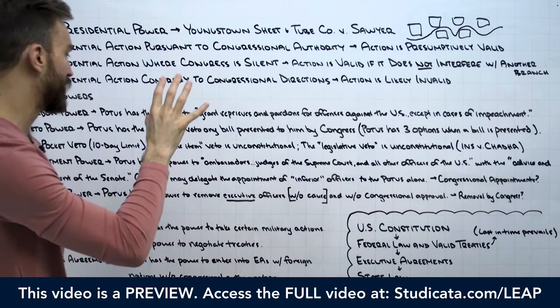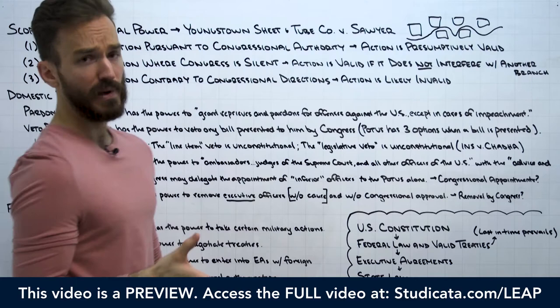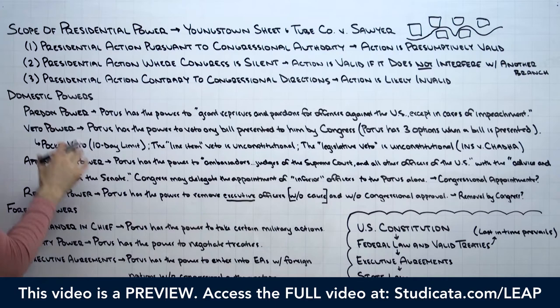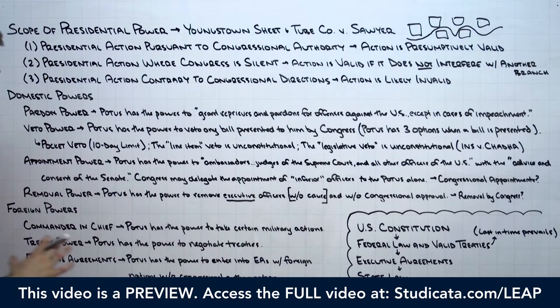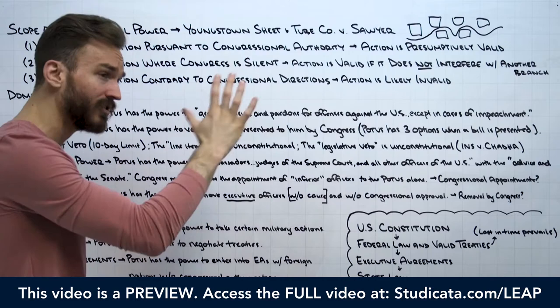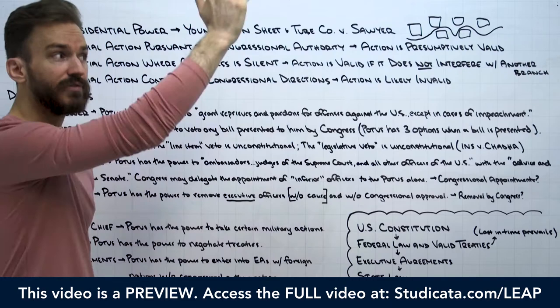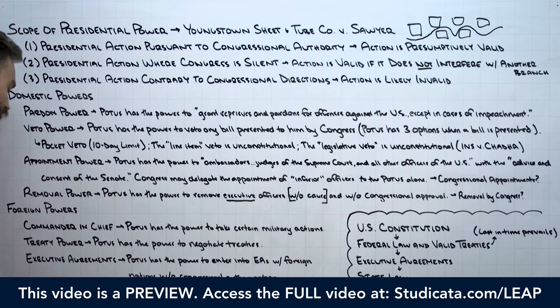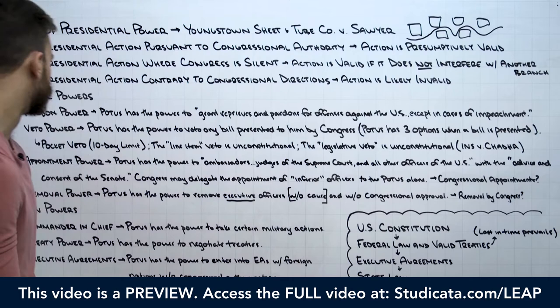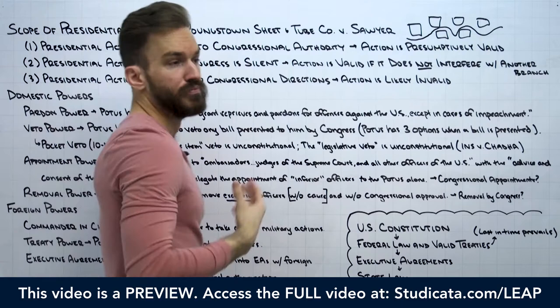From Youngstown, we can move on to the express powers of the president. Typically, you'll see express powers broken up between domestic powers and foreign powers. As a big picture, generally the president has more authority to deal in foreign affairs — his foreign powers are higher than his domestic powers. The chief job of the president in a sense is to be the leader of the United States in foreign affairs, our chief representative in dealings with other countries. In matters of foreign affairs, the president is generally given more discretion and power than in domestic matters.